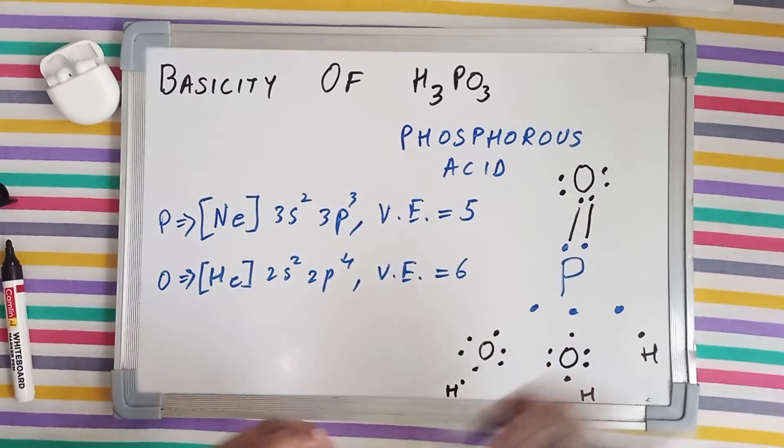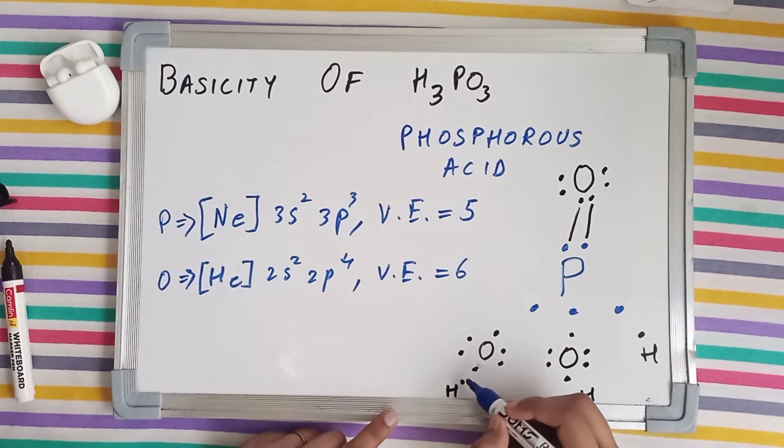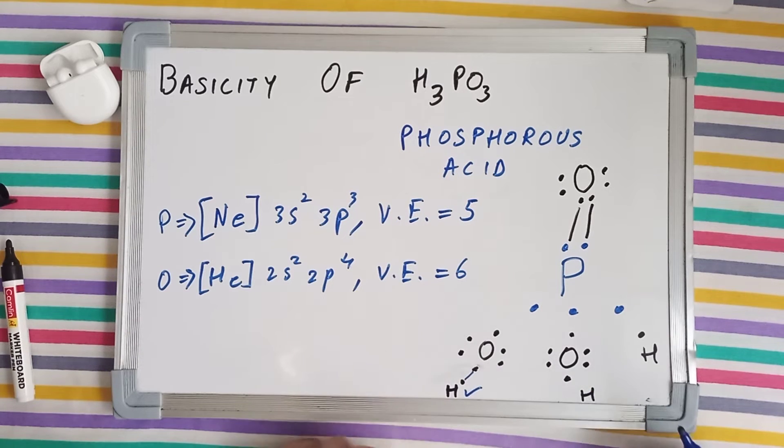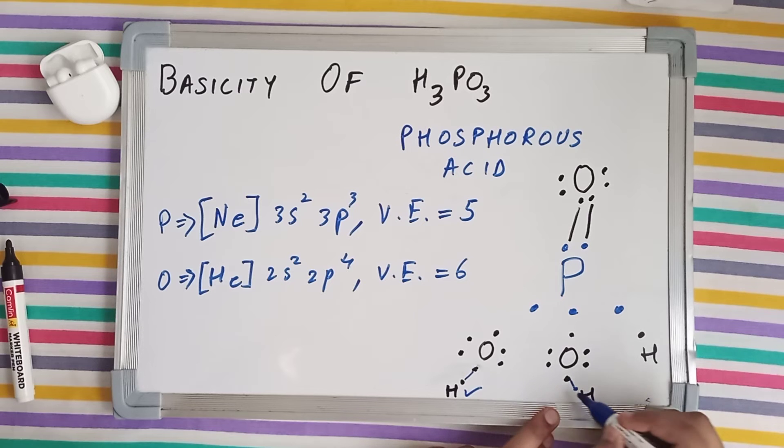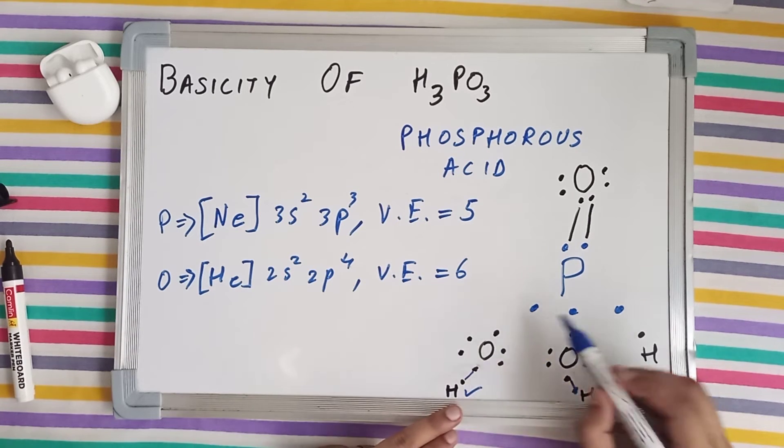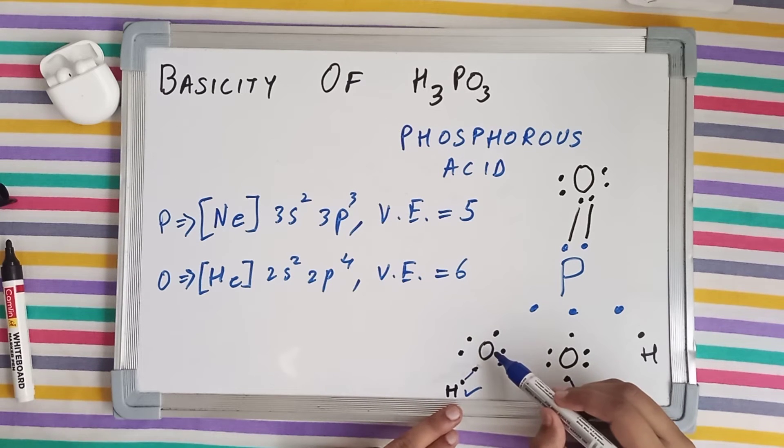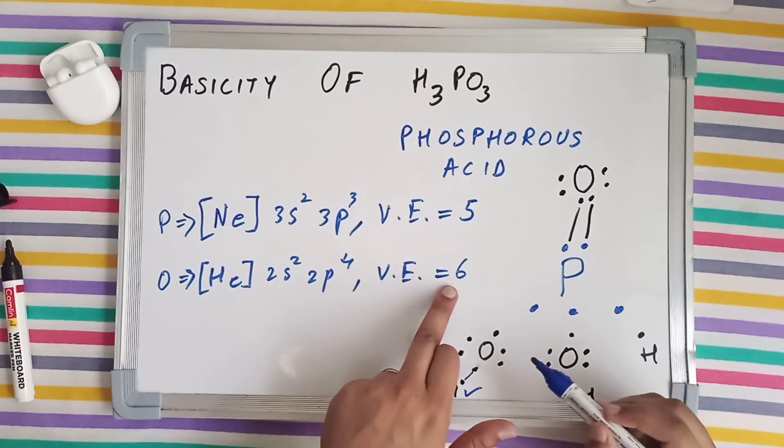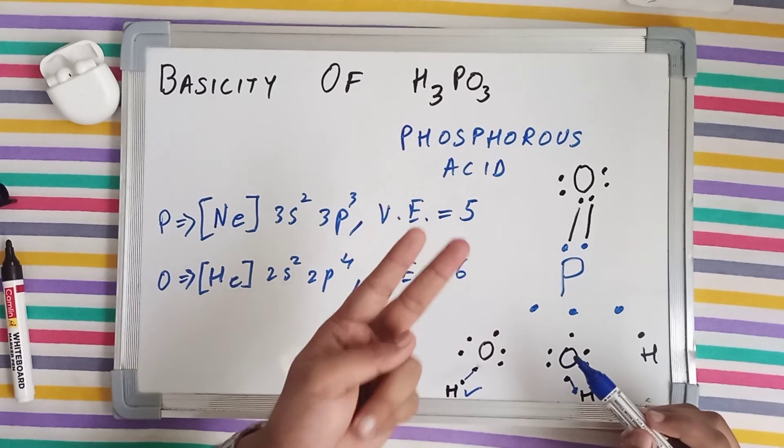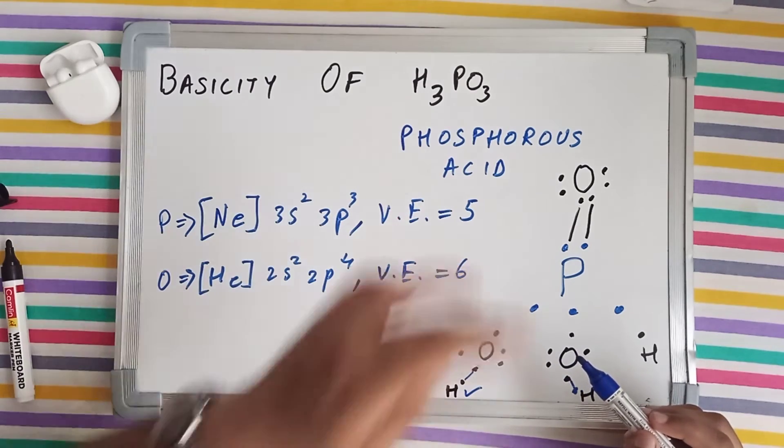So hydrogen, as you guys must be knowing, makes just a single bond and it has completed its duplet. Similarly, this hydrogen has also made a single bond and has completed its duplet. This oxygen makes two bonds because it has 6 valence electrons and it needs two more electrons to complete its octet.